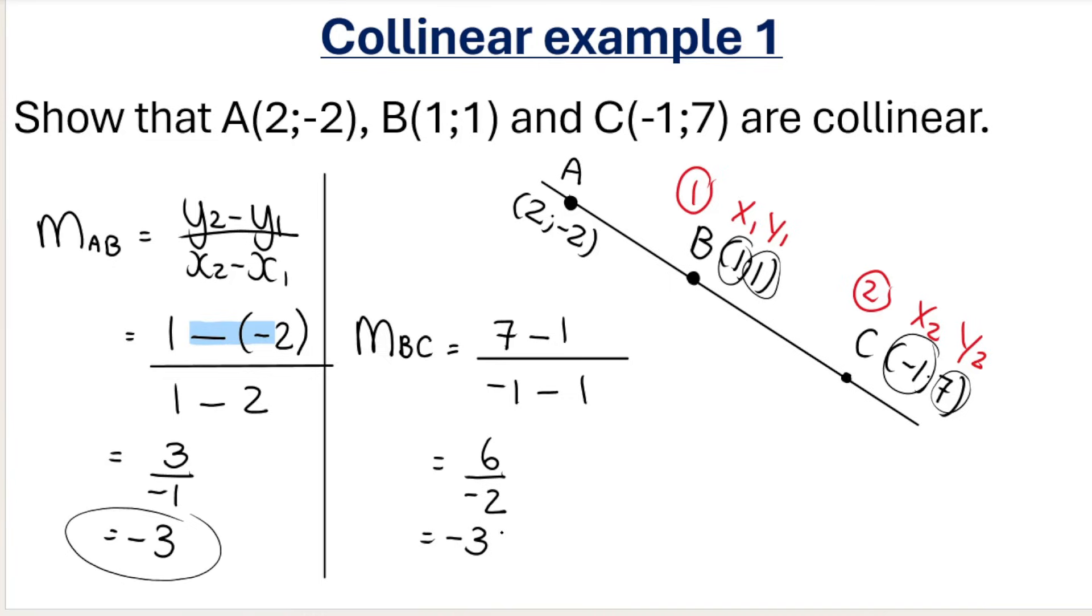Can you see these gradients are the same? I only need to compare two gradients. Remember, in the beginning I said AB, BC, and AC—I just need to pick two to compare. That's enough. Because they're the same, I can conclude that A, B, and C are collinear. And my reason? The gradient of AB is equal to the gradient of BC, which equals -3. Always give a reason at the end in brackets.